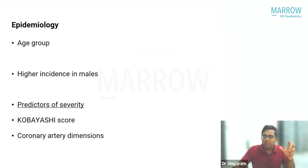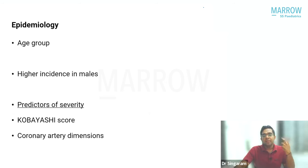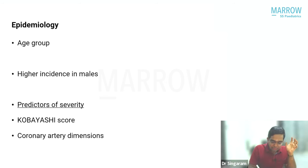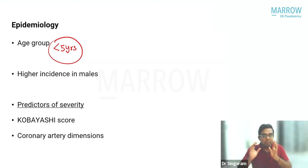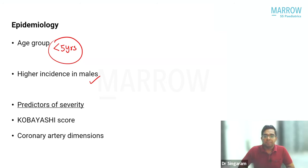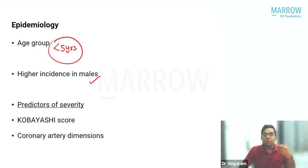Kawasaki disease is a disease of young children — less than five years of age — and is seen more often in males compared to females, though there is no specific reason for this. The Kobayashi score was derived by Japanese researchers to predict severity, but it is applicable only for Japanese children and is therefore limited in its current role.